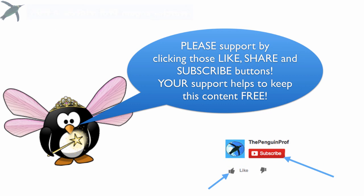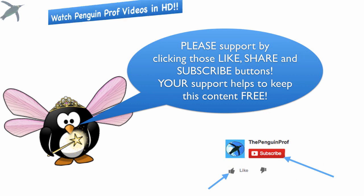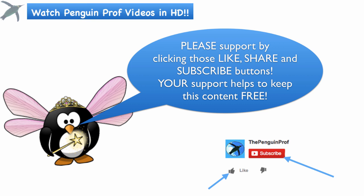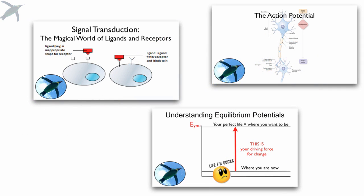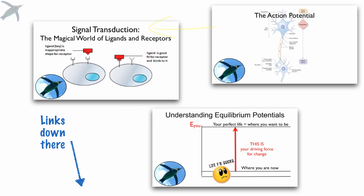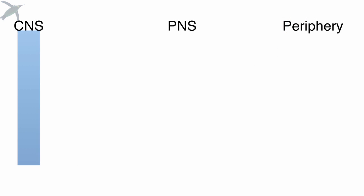If you find these videos helpful, take a second and click those buttons — it makes a big difference. Information I am assuming today: some basics about neuron function, why ions want to move in the direction they do, and the magical world of signal transduction. If these are not familiar to you, go ahead and check those out first.